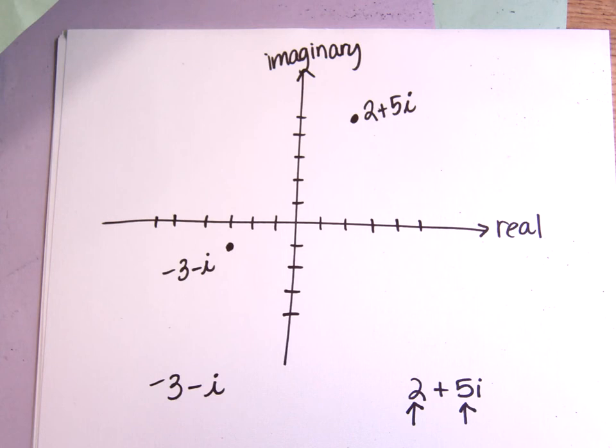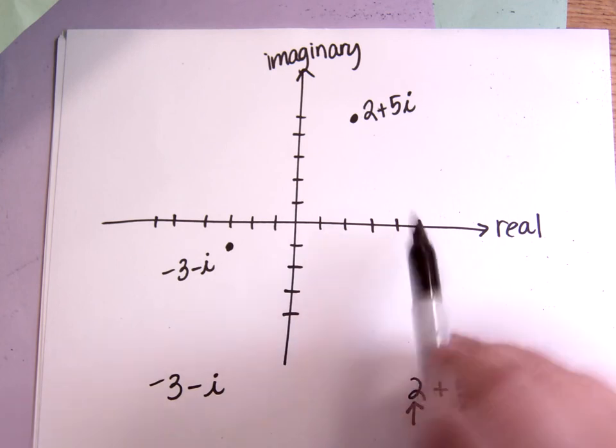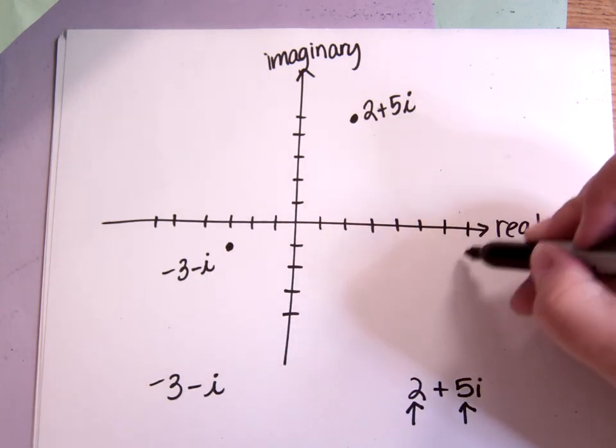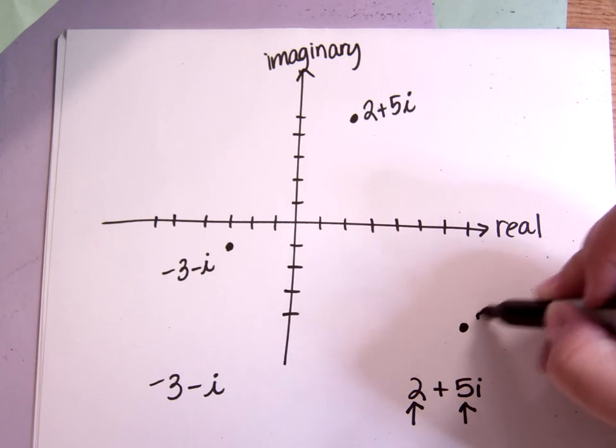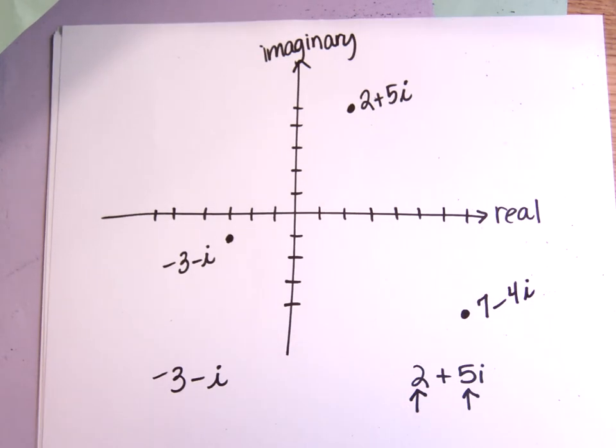And that's how you graph complex numbers. So again, for instance, let's say we had 7 minus 4i. 7 minus 4i would be going 7 to the right, and then down 4. So it would be about right here. And that's how you graph a complex number.